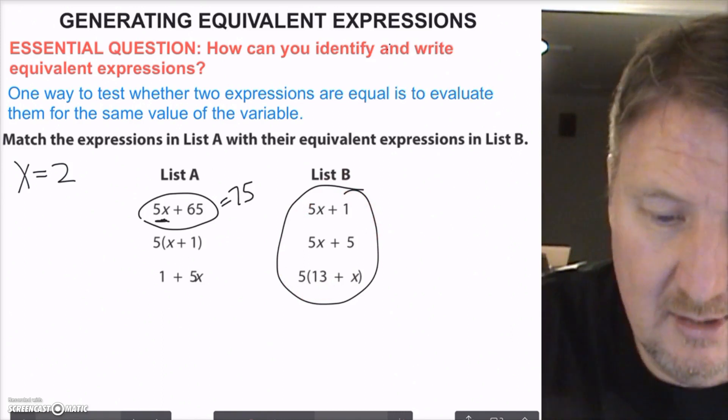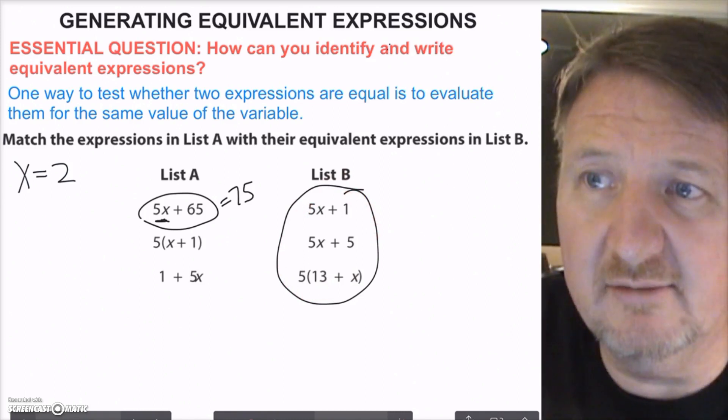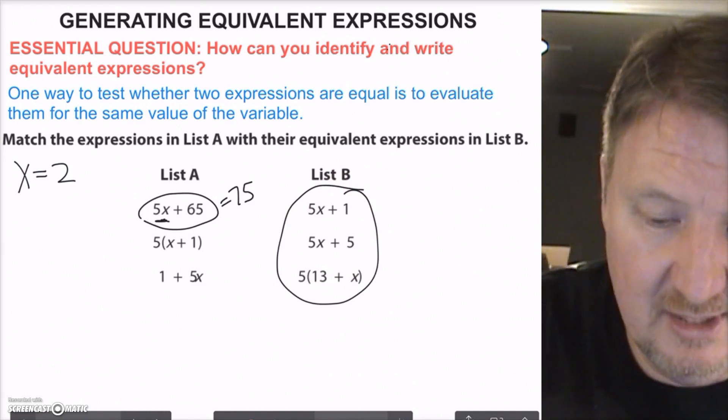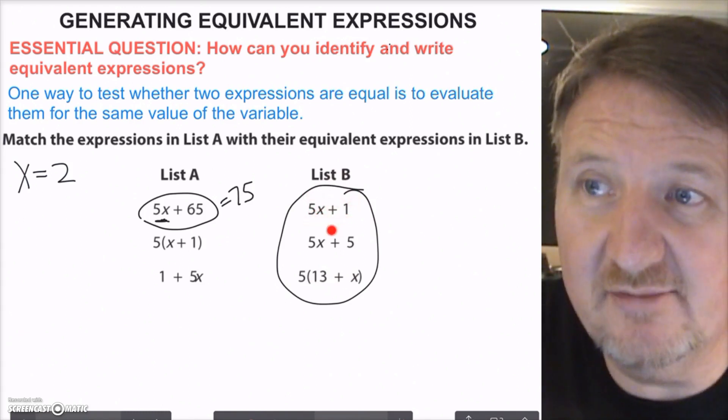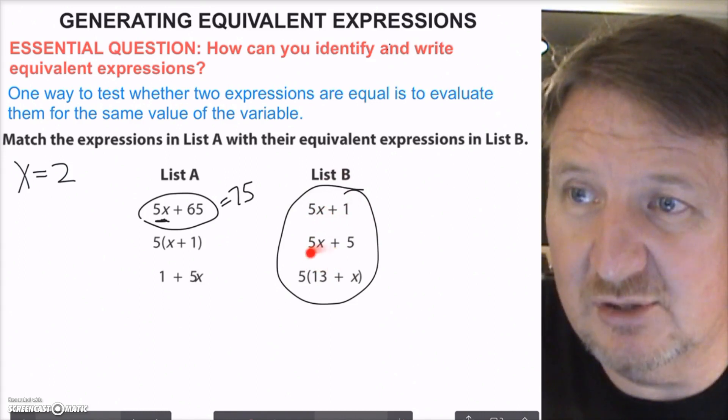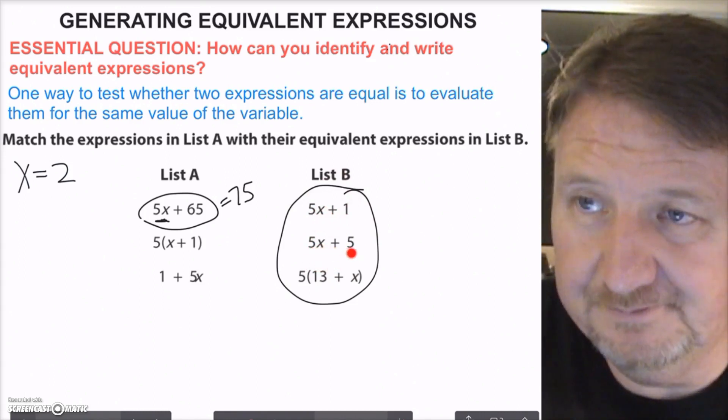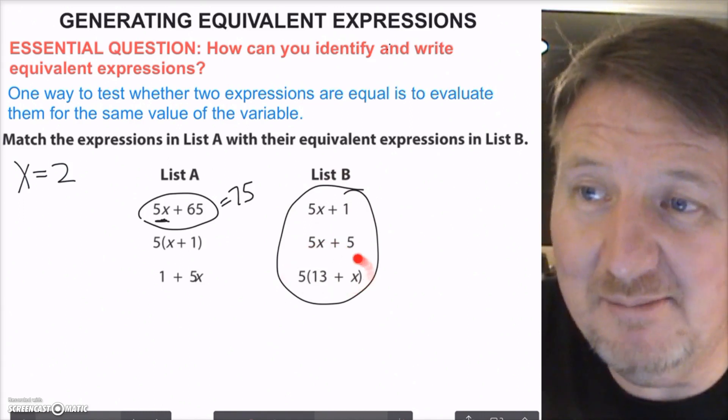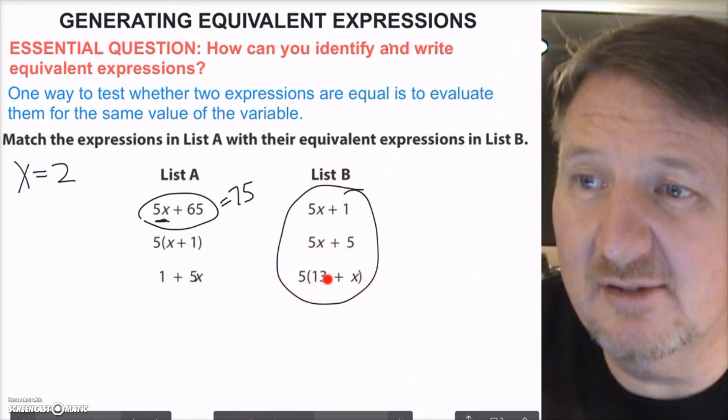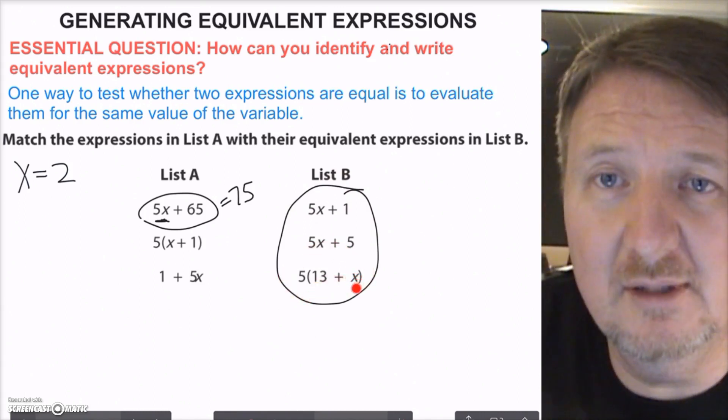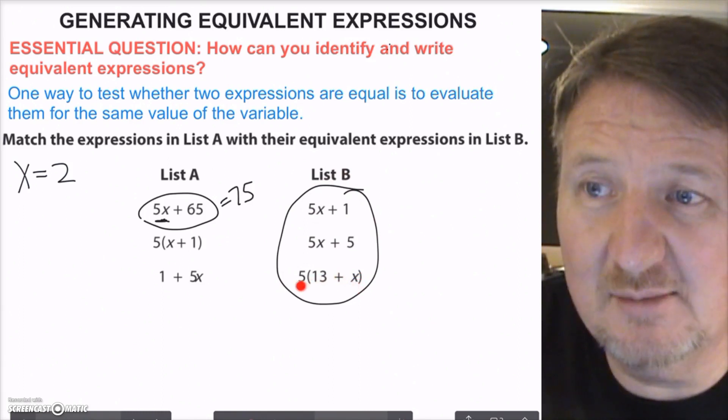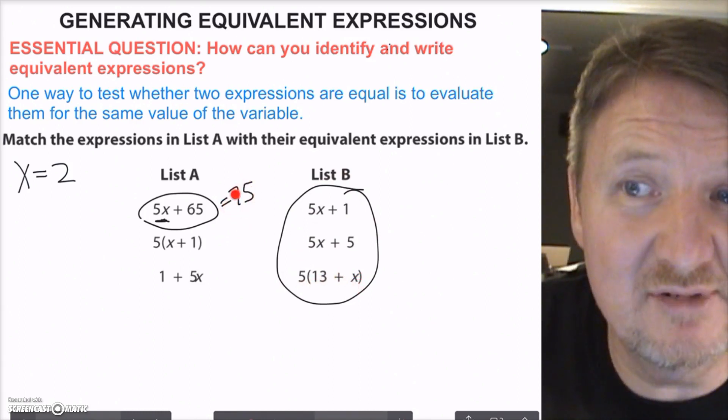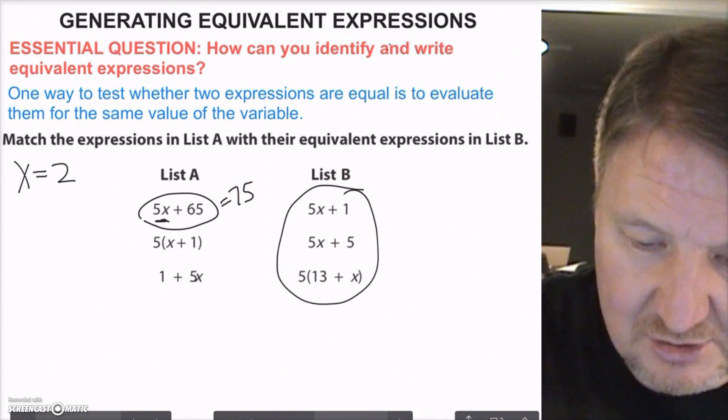So I just go through the list. I say 5x plus 1, 5 times 2 is 10, plus 1 is 11. Well, guess what? That's not equal to 75. Let's look at this one. 5 times 2 is 10, plus 5, 15. That's not equal. So it might be this one here. So I say 13 plus 2 is 15. 15 times 5 is, guess what? 75. So I have me a match. These two expressions are equivalent.